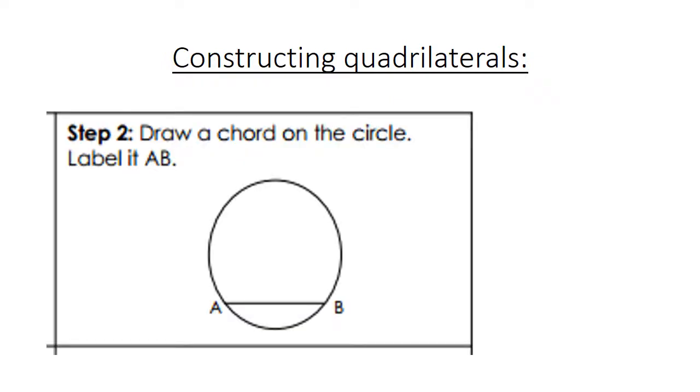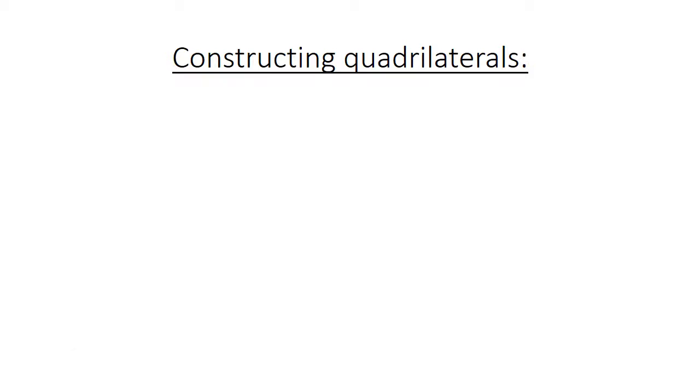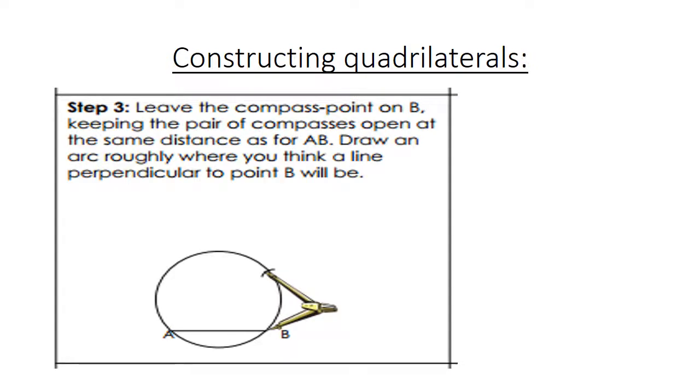Step 3. Now you leave the compass point on B. Keeping the pair of compasses open at the same distance as from A to B, draw an arc roughly where you think a line perpendicular to the point B will be.